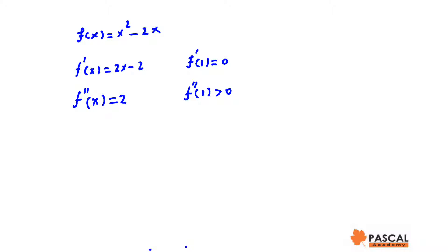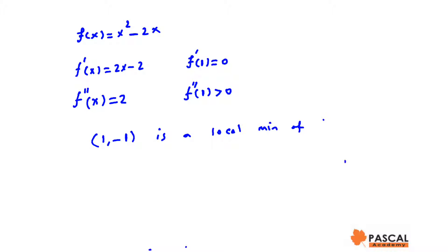Therefore, by the second derivative test, the point 1 and negative 1, meaning (1, -1), is a local minimum of the function.